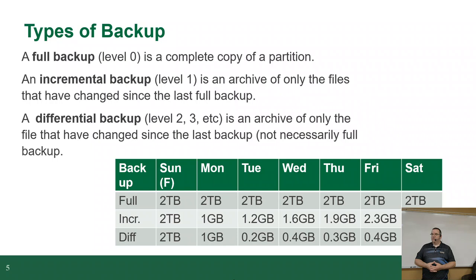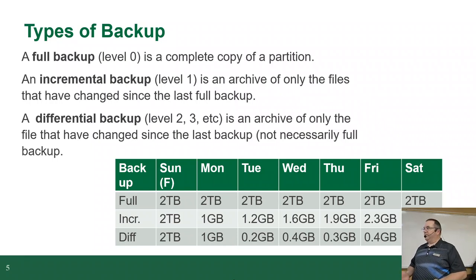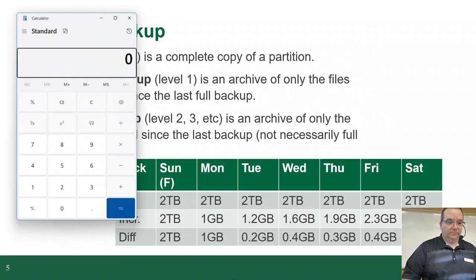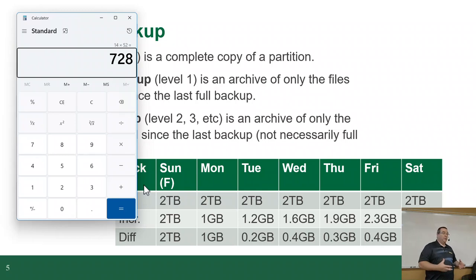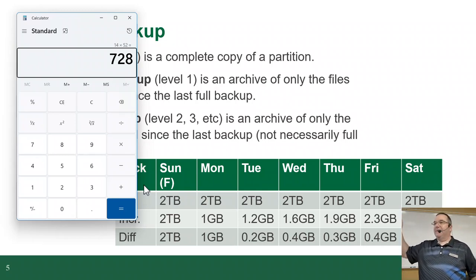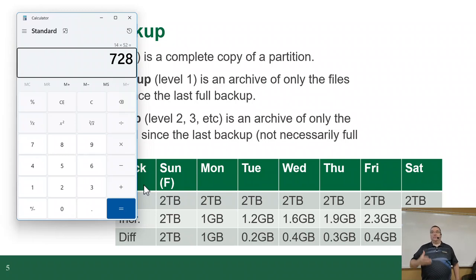So at the end of the week, two times seven is 14 terabytes — that's a lot of room. Seven days a week, two terabytes a day, 14 terabytes a week. Full backups are good because it's the entire thing, but they're bad because of the space cost. Even if you're backing up to a cloud service like Amazon, unless you're using their super slow storage options like Glacier — it's called Glacier because it's slow, like it's frozen — it's going to cost you a fair amount of money.